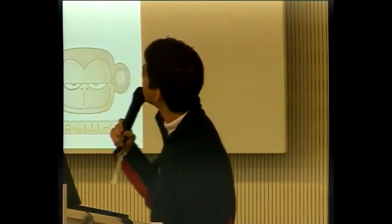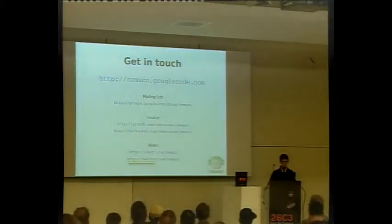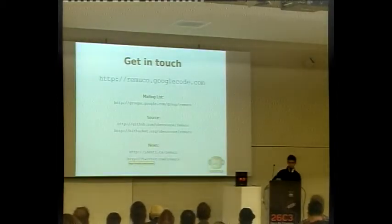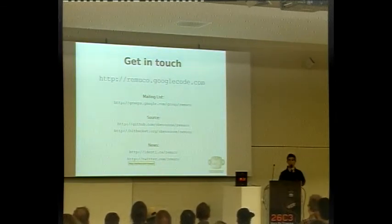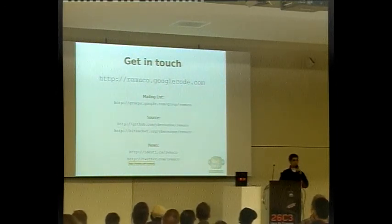Get in touch and help us. There's the Google Code project, a mailing list, and the source code is mirrored on GitHub and Bitbucket if you happen to prefer Mercurial over Git. There's also Twitter and Identi.ca. If you have ideas, come talk to me — my name is Igor. It's not on the slide because the organizer did it, not me. Thank you for listening, and I welcome you to our project.